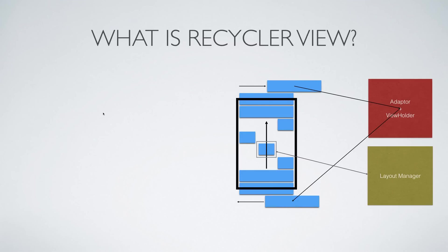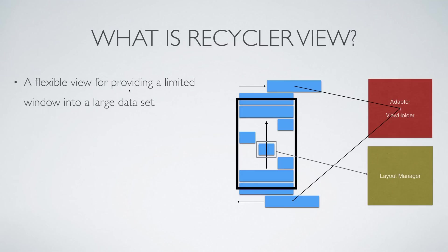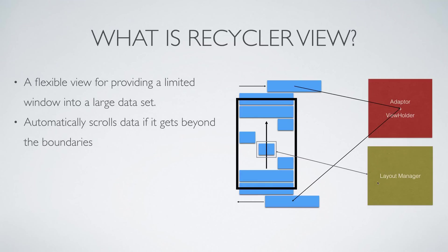If you look at the definition of a RecyclerView, it displays items within a limited window because the user's screen can only show a few items at a time, from a large data set of potentially thousands. The two most important parts are a LayoutManager and an Adapter with a ViewHolder. The LayoutManager is responsible for the items' width, height, spacing, and scroll direction. The Adapter takes an item and puts data on top of it so you can see it on screen.